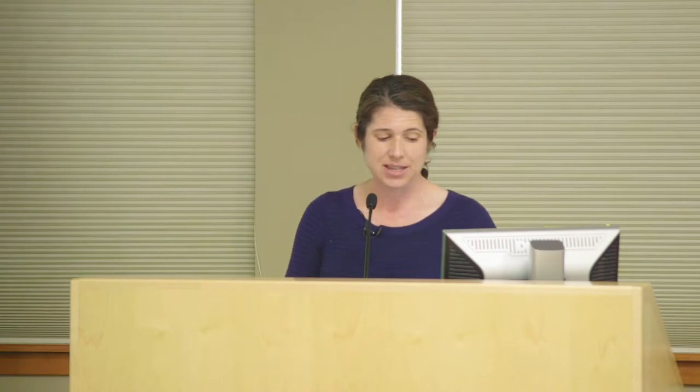The eardrum is like a piece of saran wrap or a window — you should be able to see through it and see what's behind it. This picture shows what's behind the eardrum: the eardrum connects to the first bone, then the second, then the third — the stirrup or stapes. These bones should be surrounded by air and allowed to vibrate, not filled with fluid. You can see the space behind the eardrum, and I'll talk later about the eardrum getting sucked in or retracted — it literally can fill up that space.